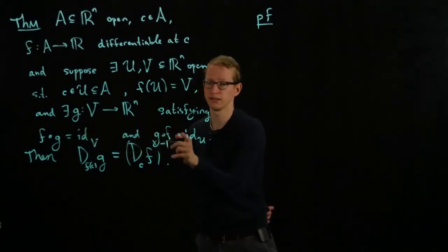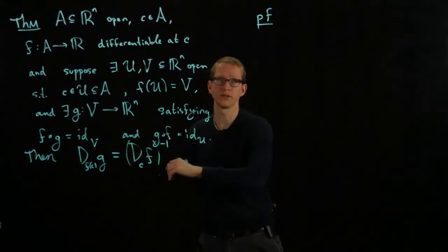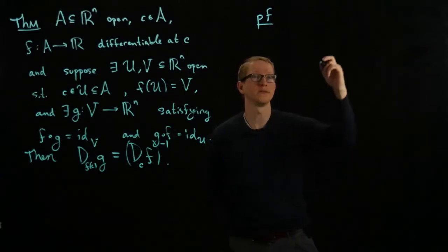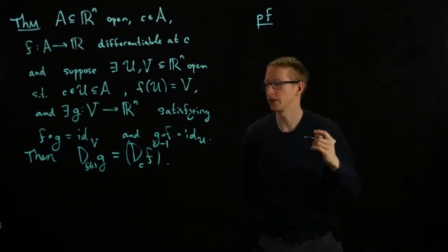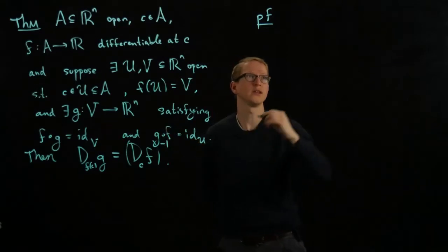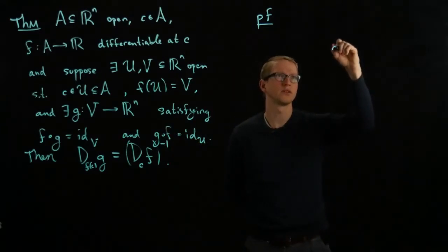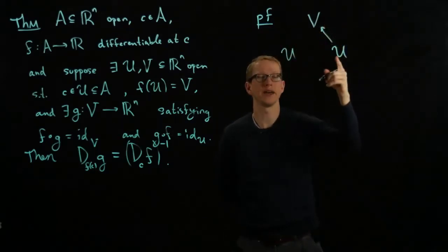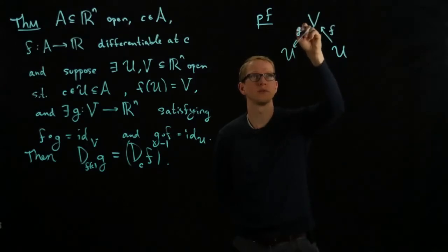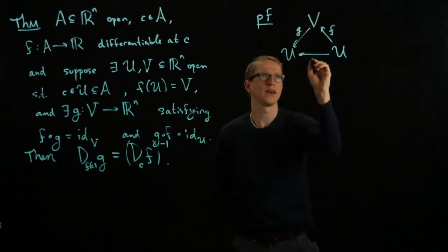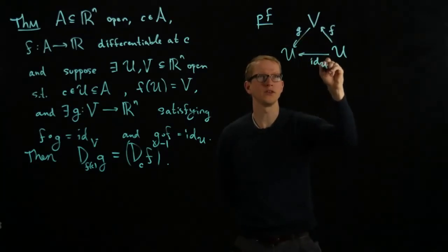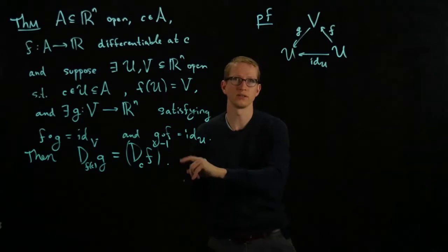These two equations that describe to us the fact that F and G are inverses of each other are consequences of a commutative diagram. And what commutative diagram is that? Well, let's just write out F and G as compositions. So if we start out with their domains, then we have that F is a function from U to V, G is a function from V to U, and this composition being the identity at U is exactly what this right equation is telling us.